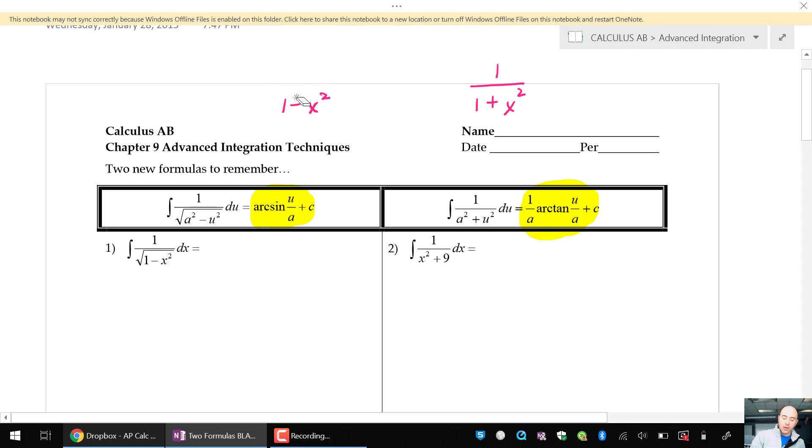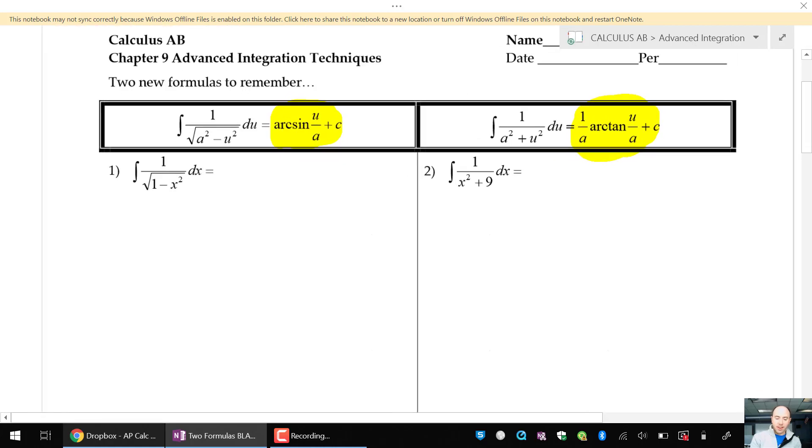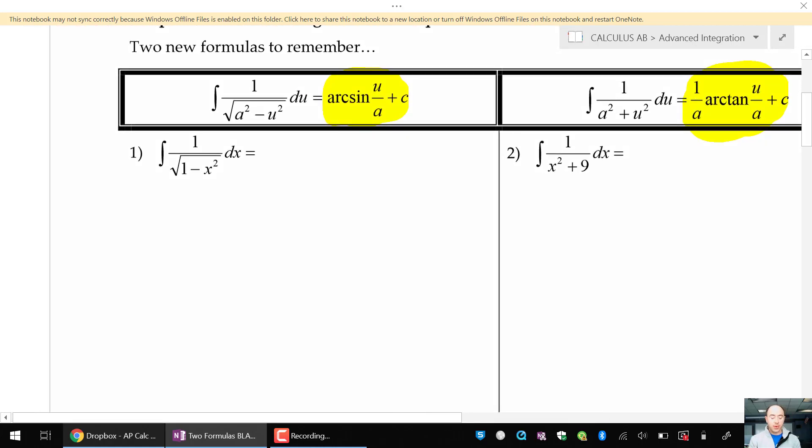But there's a little bit of a twist. So u substitution is going to come back and make a minor play in these problems. Let me begin by going over example number 1 with you here. So what I would want to do first here is identify what is a and what is u. Looks like I have a squared as 1, so a is 1. And u squared would be the function. a represents the constant and u represents the function. So u squared is x squared, which means that u is equal to x.